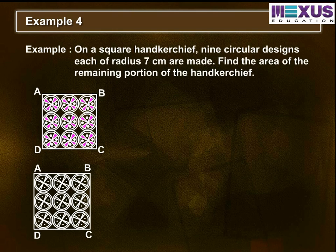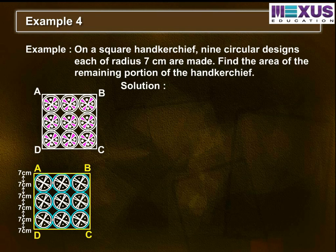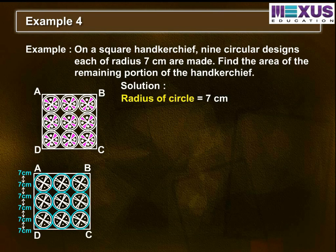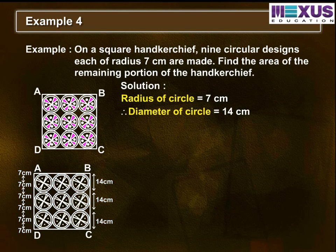Example 4: On a square handkerchief, nine circular designs each of radius 7 cm are made. Find the area of the remaining portion of the handkerchief. We have to find the area of the square and each circle; the difference between the area of the circles from the square will give us the area of the remaining portion. Here we can see nine circles, each with radius 7 cm, so the diameter of each circle is 14 cm. From this, the side of the square equals 14 into 3, equal to 42 cm.